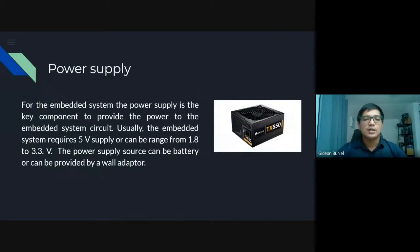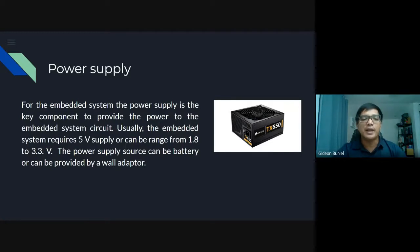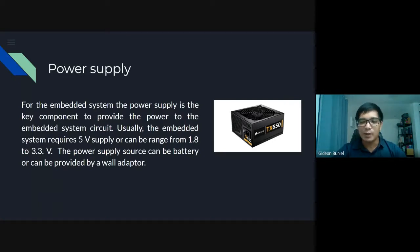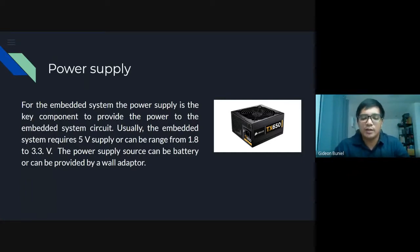Every embedded system has a power supply. This TX-650 can also be a power supply for your embedded systems. The power supply is the key component to provide power to the embedded system circuit — it powers up the system. Usually the embedded system requires a 5-volt supply, or can range from 1.8 to 3.3 volts. Embedded systems nowadays mainly focus on electronics, that's why most require only 5 volts, though there are those that require 12 volts.